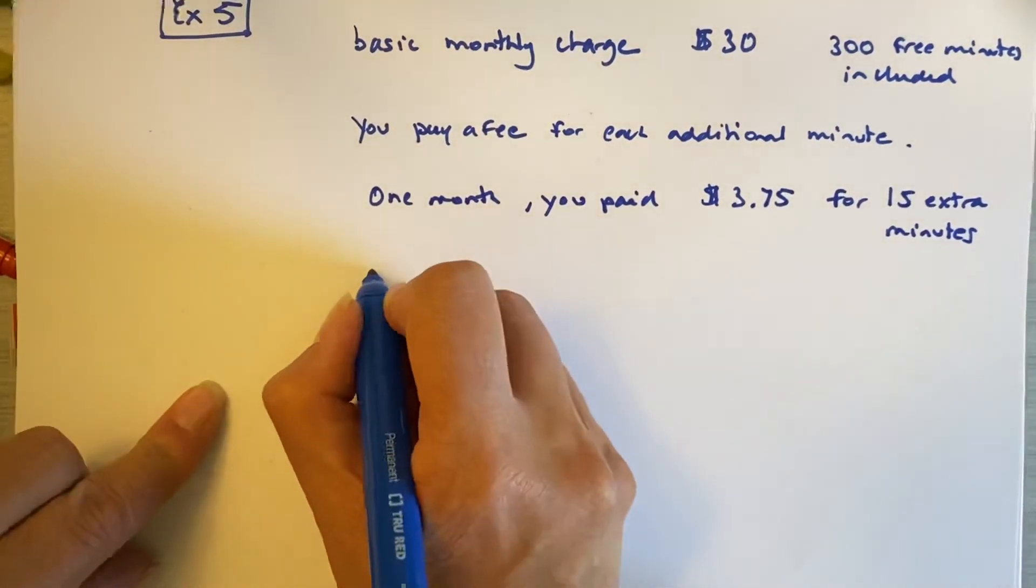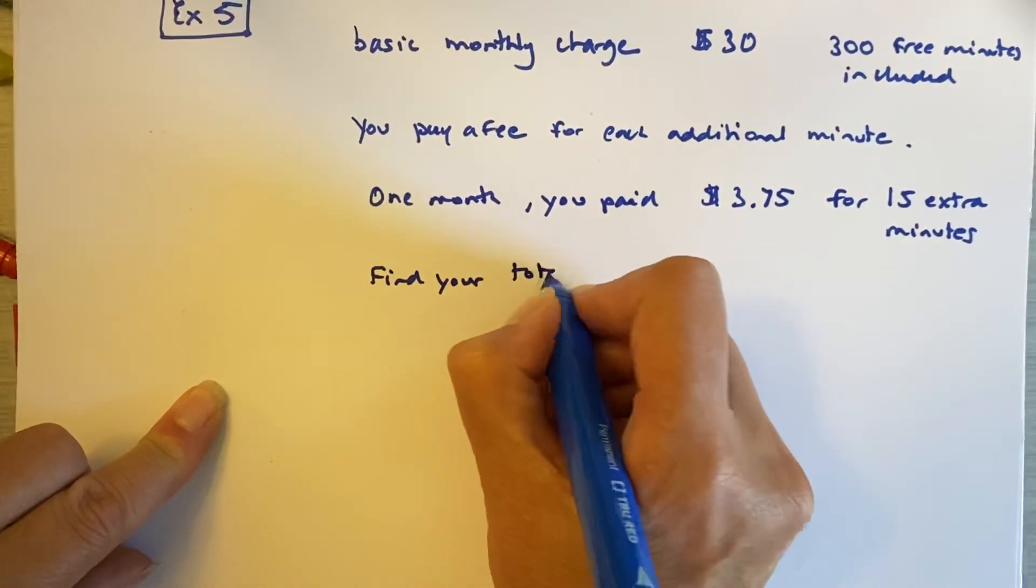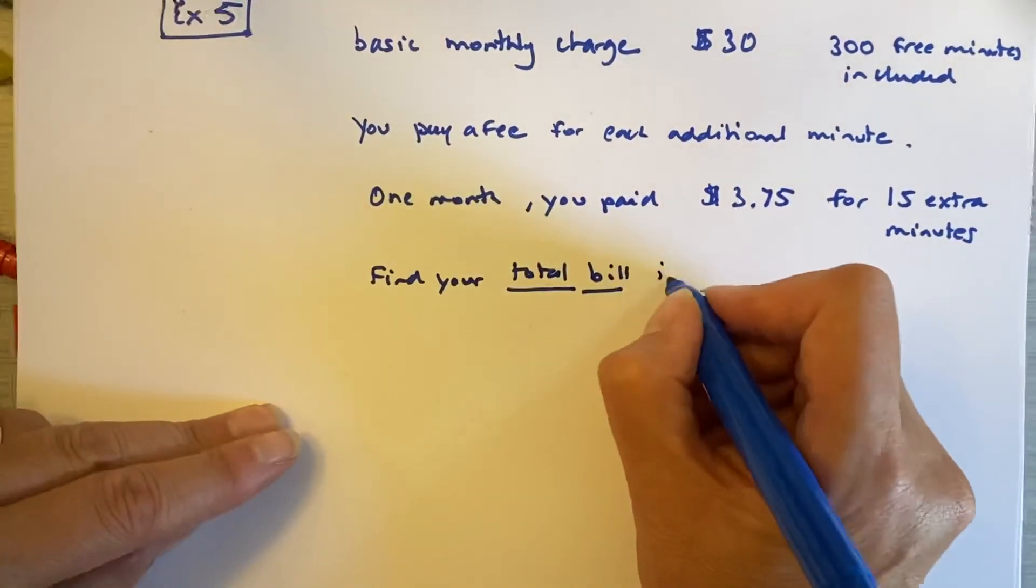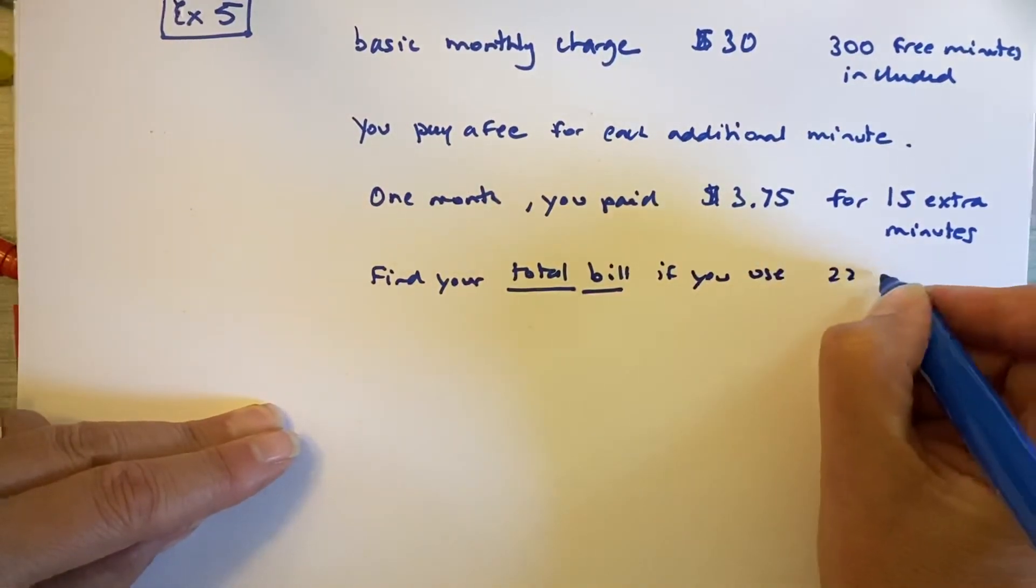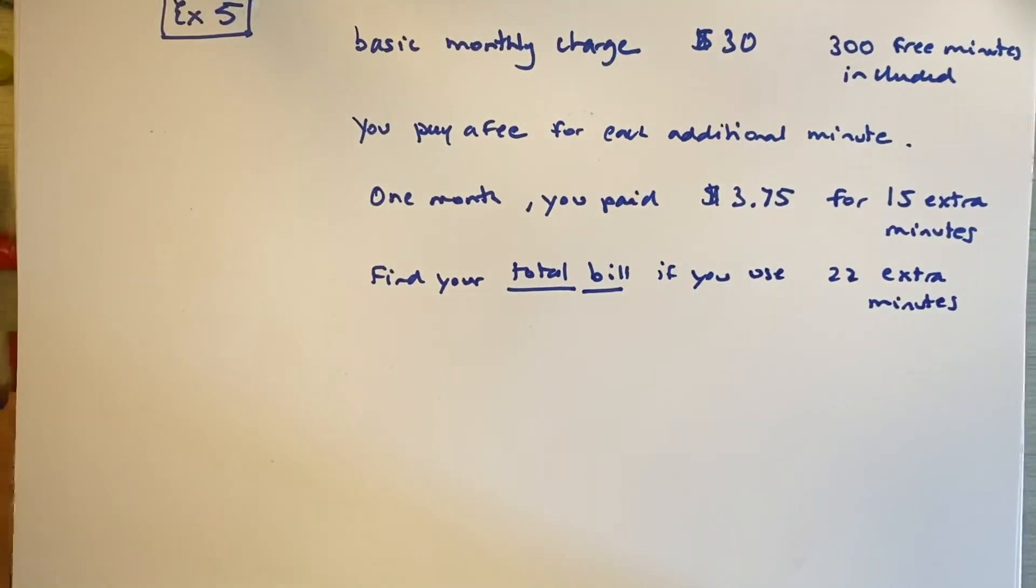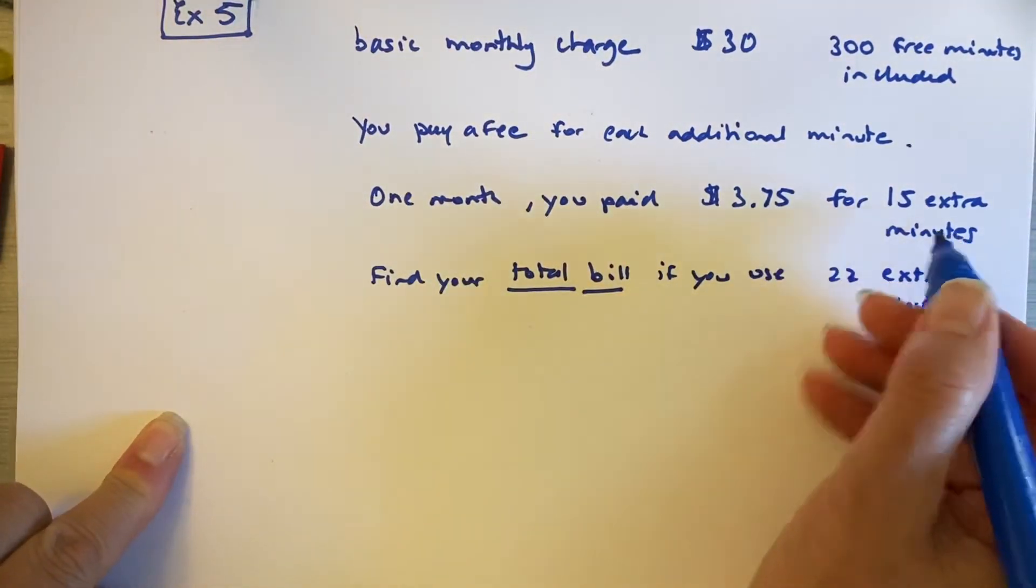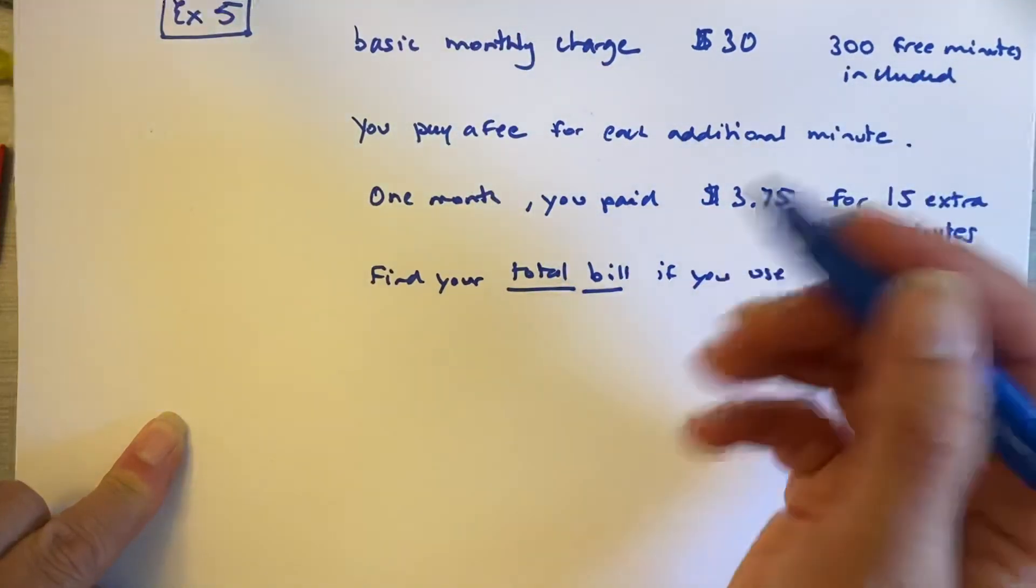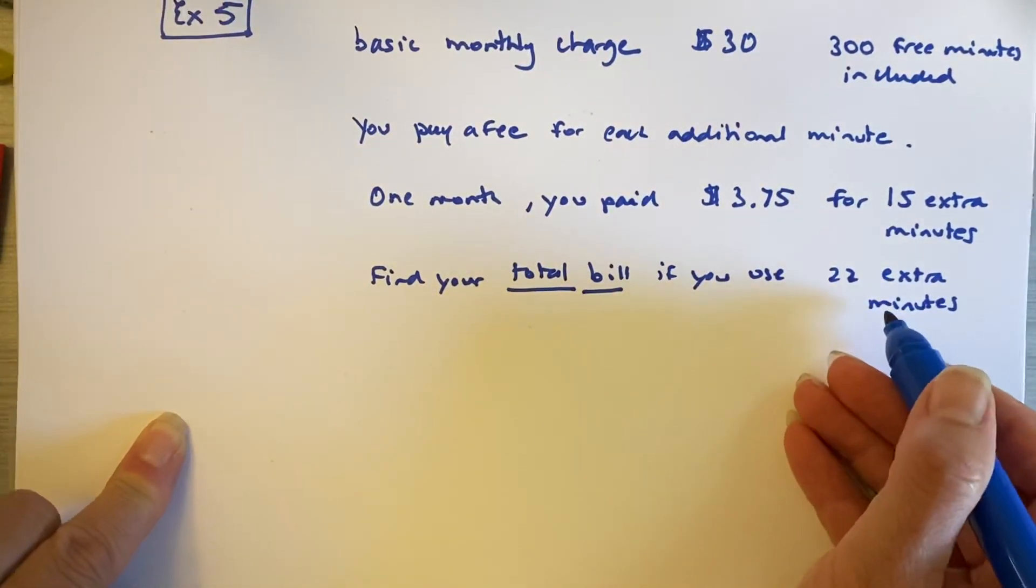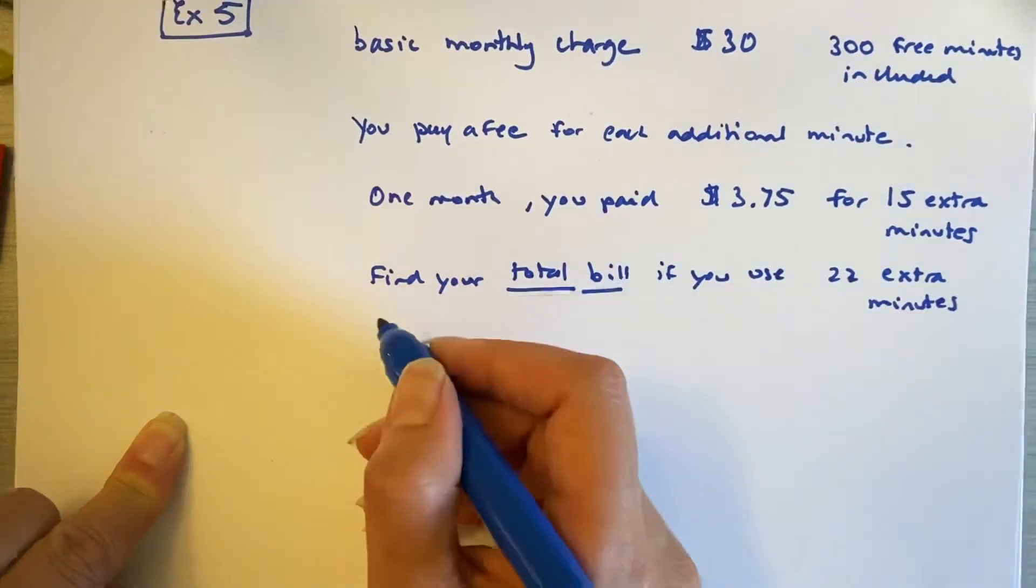Okay? Find your total bill. Now, understand, you have to read these carefully. Find the total bill if you use 22 extra minutes. Okay. So this just followed a little detour on rates. So let's go back to the beginning. You have a basic monthly charge of $30. That includes 300 free minutes. One month, you went over, 15 minutes over, and you found you paid $3.75 more than $30. So presumably $33.75. This month, you haven't gotten your bill yet, but you realize, oh, I used 22 extra minutes. I'd like to know what my bill is ahead of time.